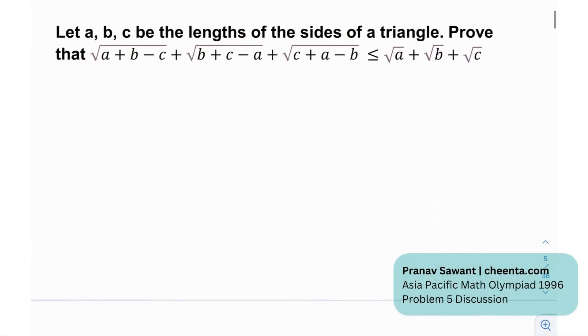Okay, so they're asking us that let ABC be the lengths of the sides of a triangle, and then we need to prove that it satisfies this given inequality. ABC are basically sides of a triangle. And so any general triangle, the sides of any general triangle will satisfy this given inequality. That's what we need to prove.